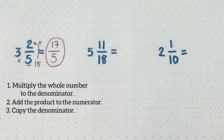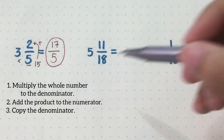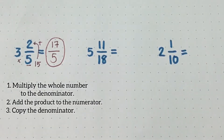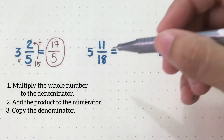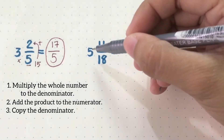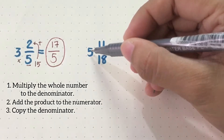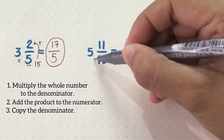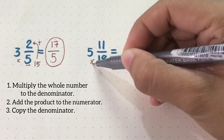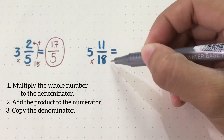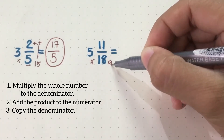Let's try those three steps in our second example. First, multiply 5 and 18. 5 times 18, that will be equal to 90.